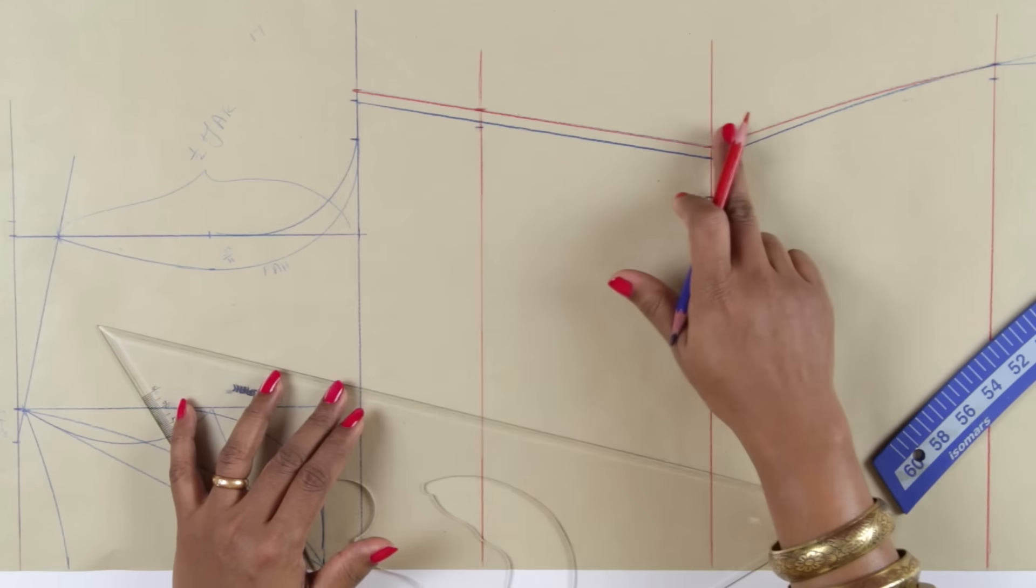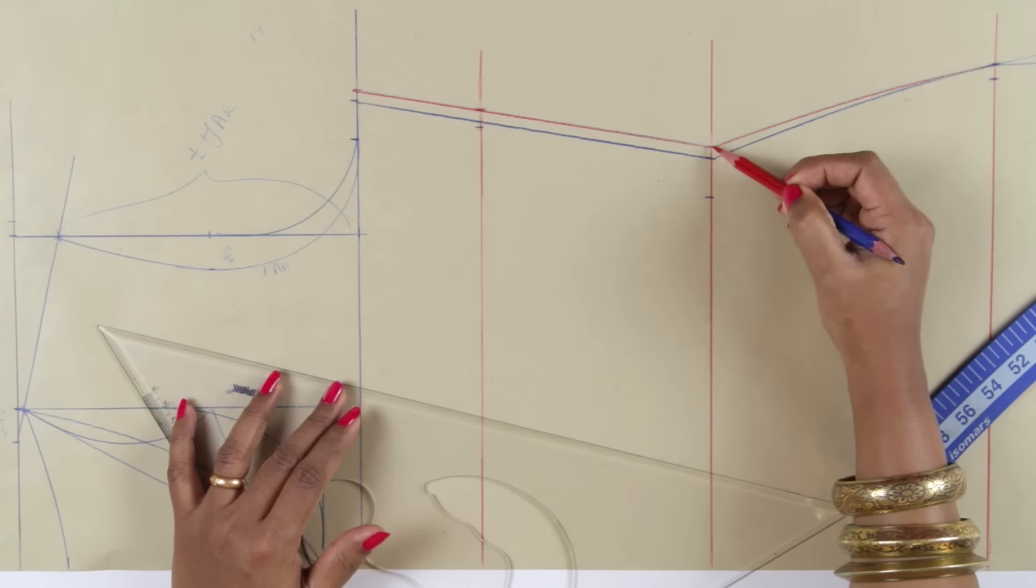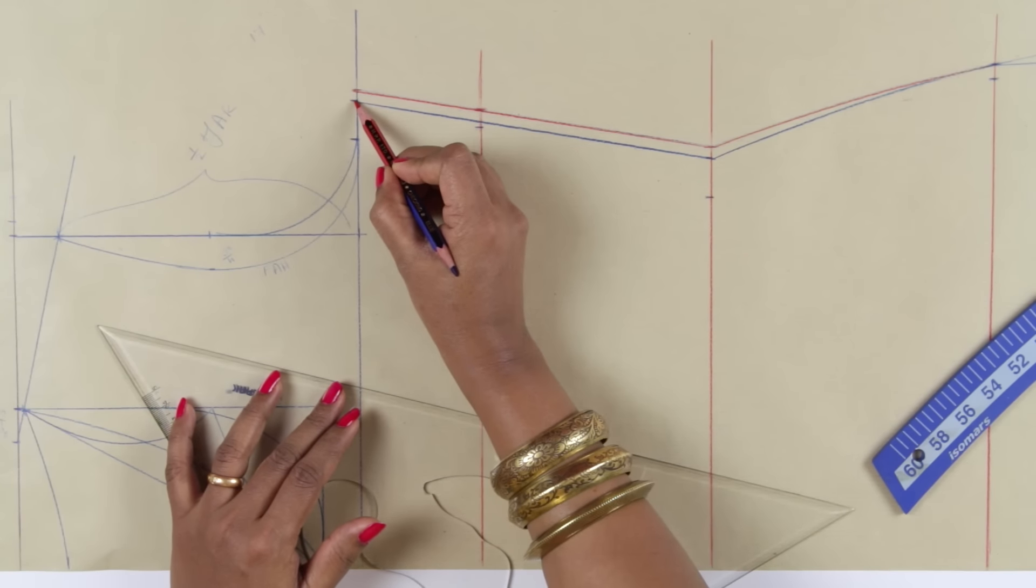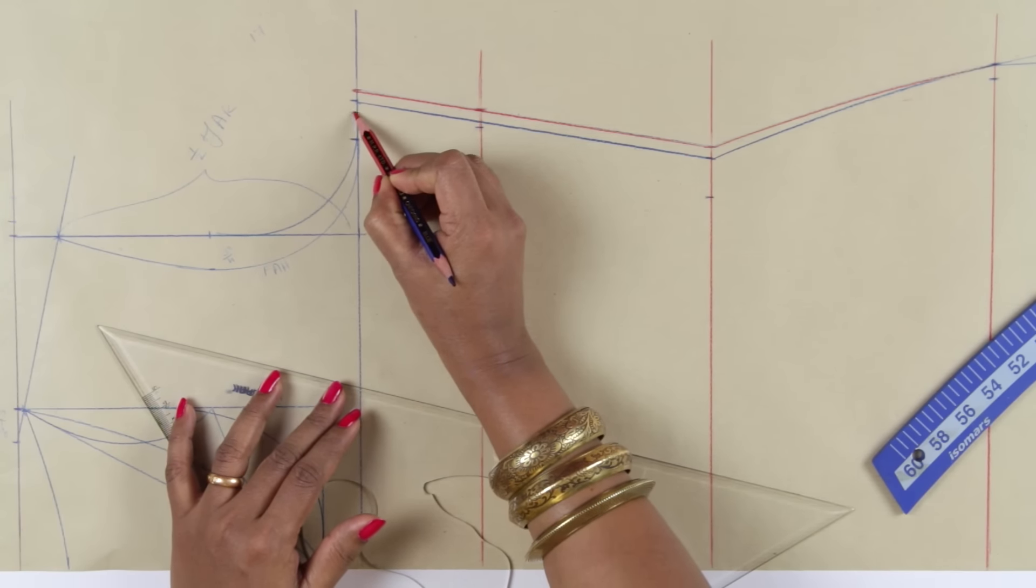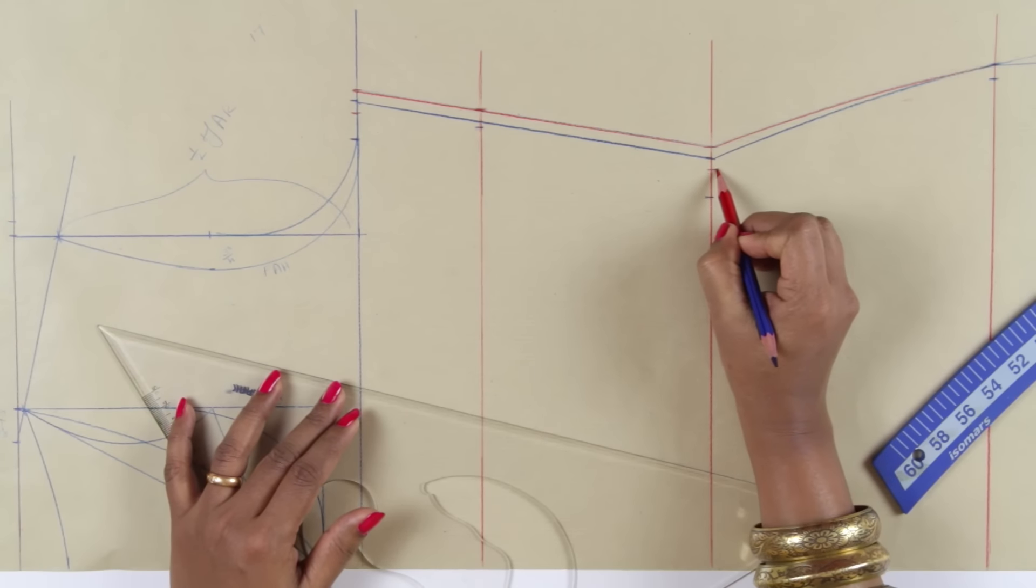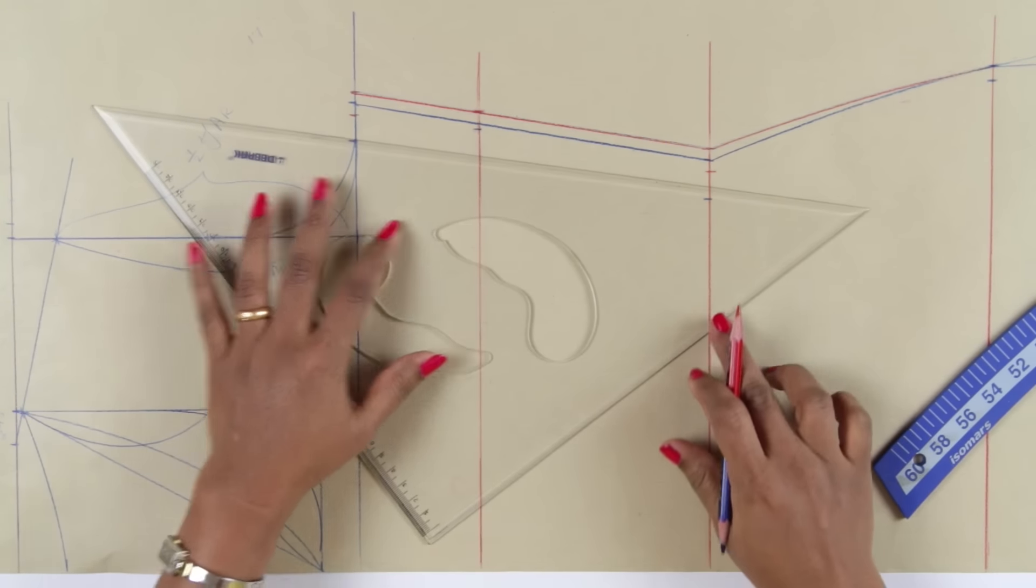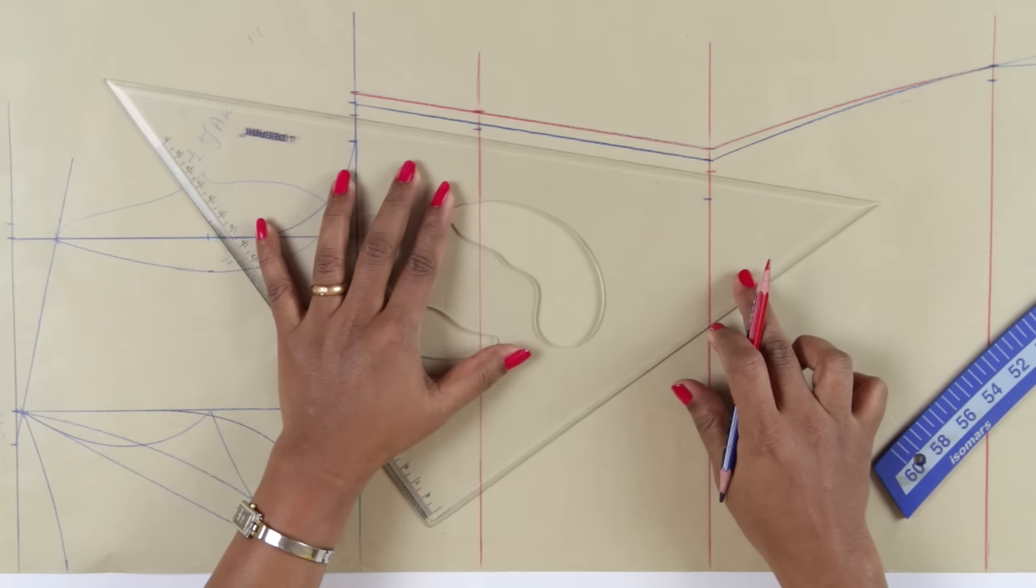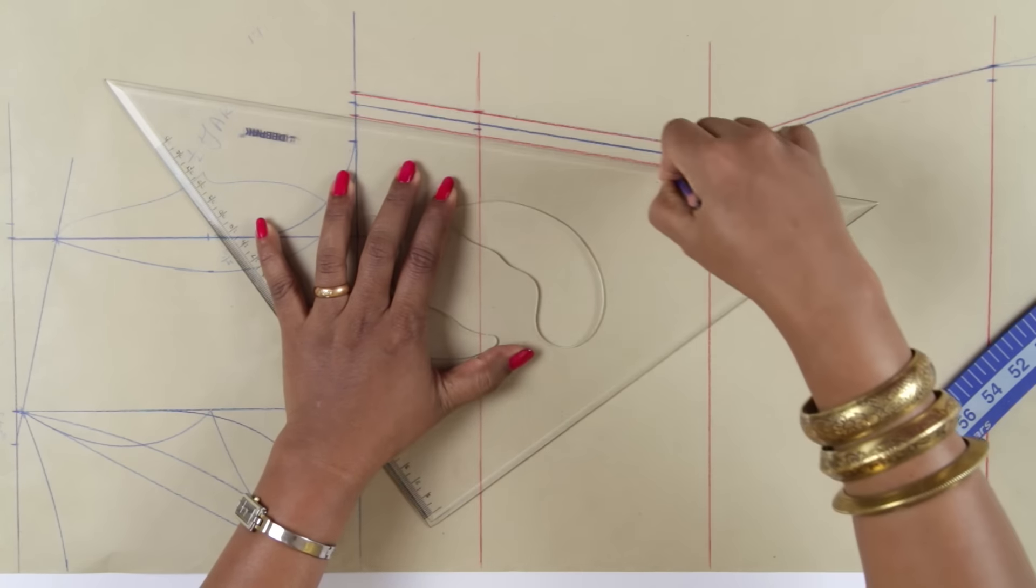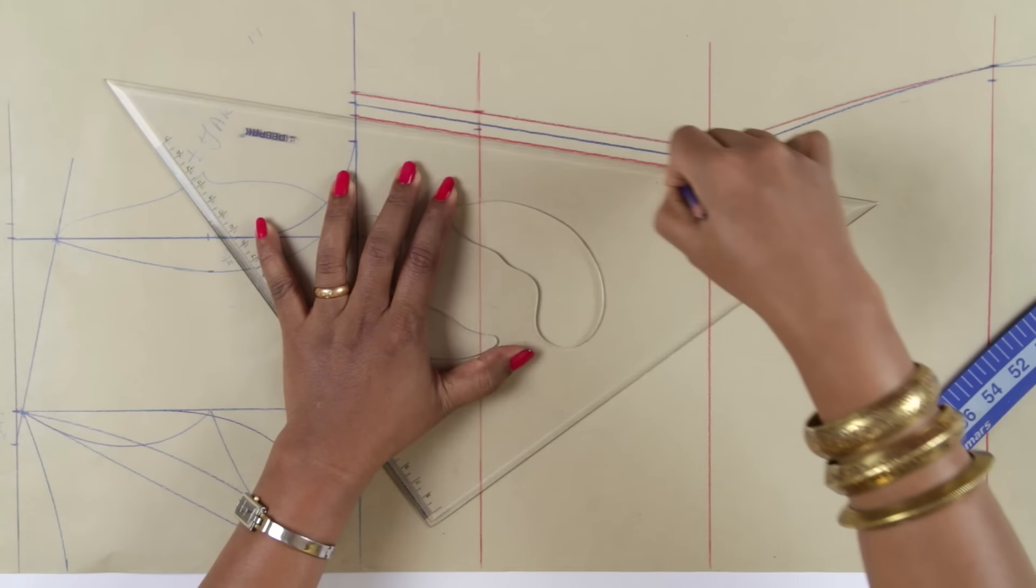For the front, you have made the changes. Now whatever excess ease you have given in the front, reduce it at the back. So from the original ease point, reduce quarter inch on the chest line and on the waist line. And your back line and the front line will not be same. This would be your back line with the reduced ease.